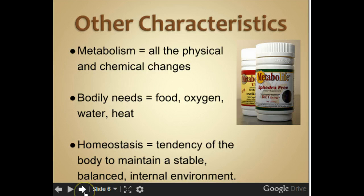Other characteristics: metabolism is all the physical and chemical changes in our body that take place when we obtain and use energy. Body needs include food, oxygen, water, and heat. Homeostasis is the tendency of the body to maintain a stable and balanced internal environment, and this is a topic that will be touched on in more assignments this week.